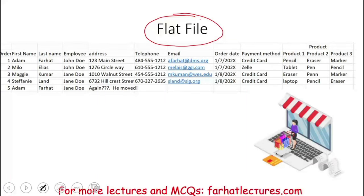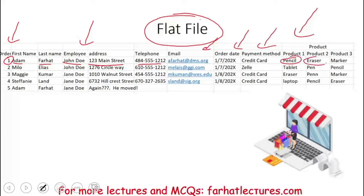This electronic store keeps track of their sales using an Excel sheet, which is a flat file. They have order numbers — order one for Adam Farhat, the employee that helped him is John Doe. The customer's address, phone number, email, order date, how they paid, and the products they bought: product one, product two, product three. Then we have another customer, Milo Elias, also helped by John Doe, with his address, telephone number, email, and so on.